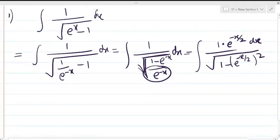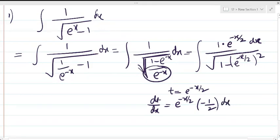Now we can put t is equal to e to the power minus x by 2. Derivative of this, dt by dx will be e to the power minus x by 2 into derivative of minus x by 2, minus 1 by 2 dx.